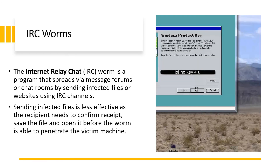Next is IRC worms. IRC means internet relay chat worm. It is a program that spreads via message forums or chat rooms. Some examples of such chat networks are Operanet, Undernet, and DALnet. IRC worms spread by sending infected files or website links using IRC channels. The IRC network is connected to thousands of channels, making it susceptible to worm attacks. However, IRC worms are considered less effective because the receiver must confirm, open, and save the infected file in order for it to spread.